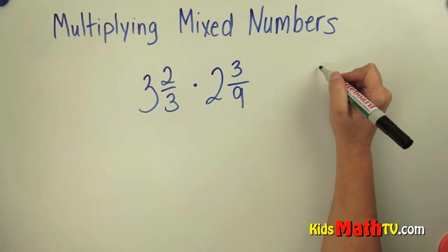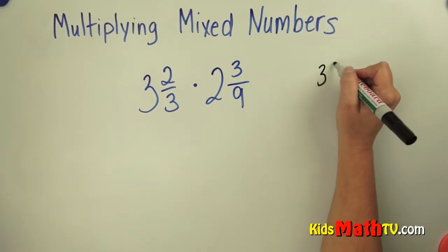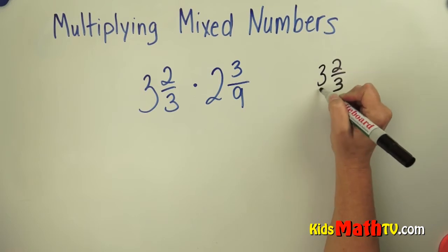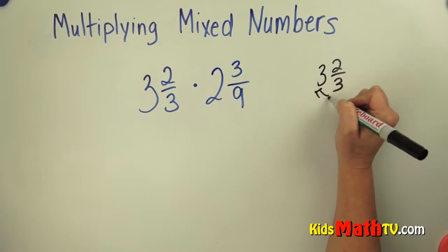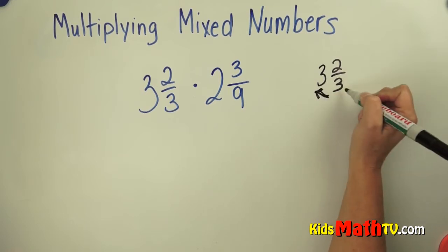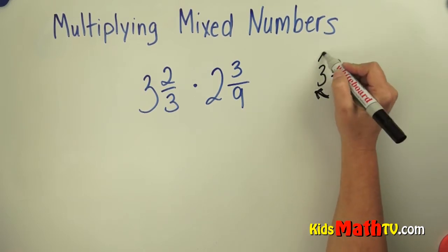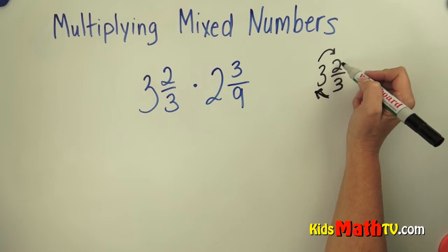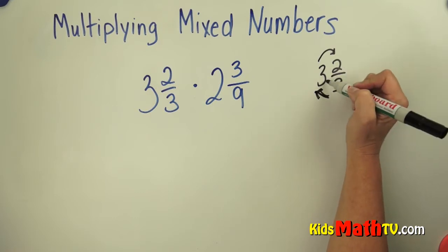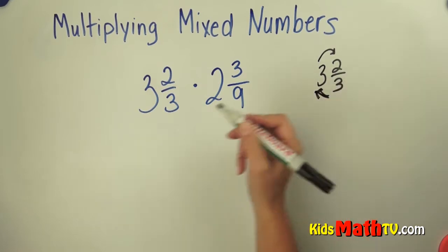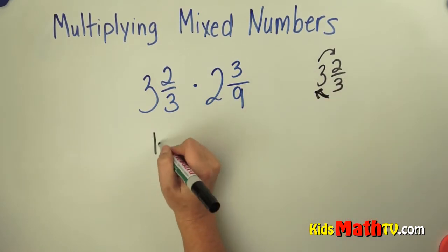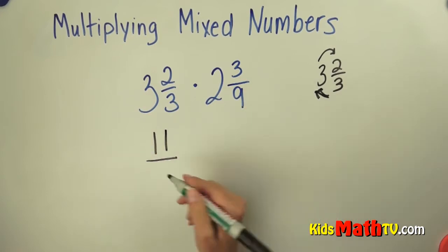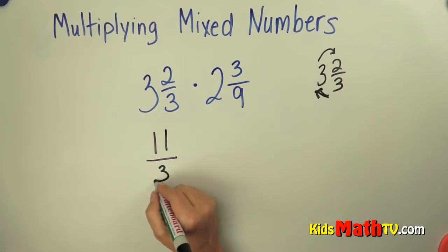To do that, we take 3 and 2 thirds and we multiply. 3 times 3 is 9, and then we add 2 more, giving us 11. We have 11 over the denominator 3.